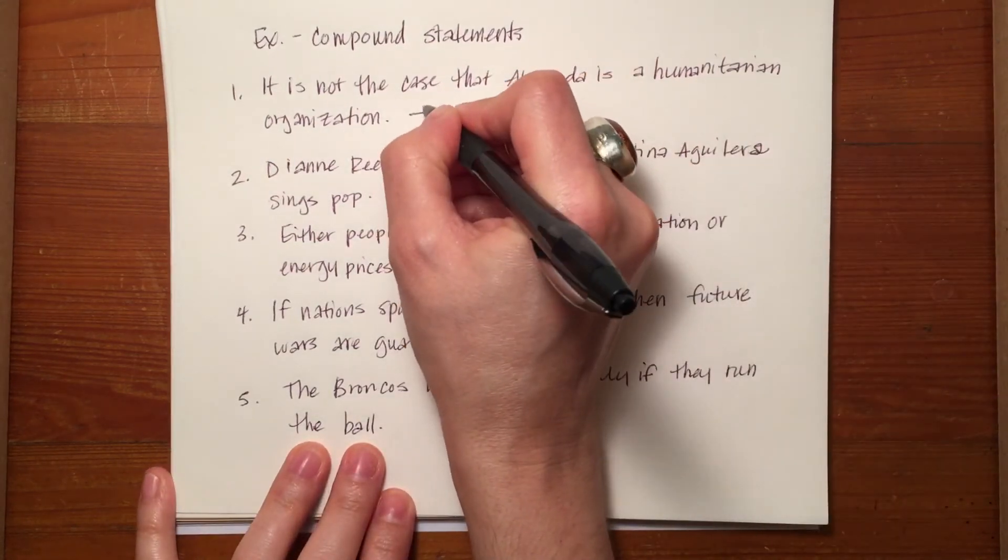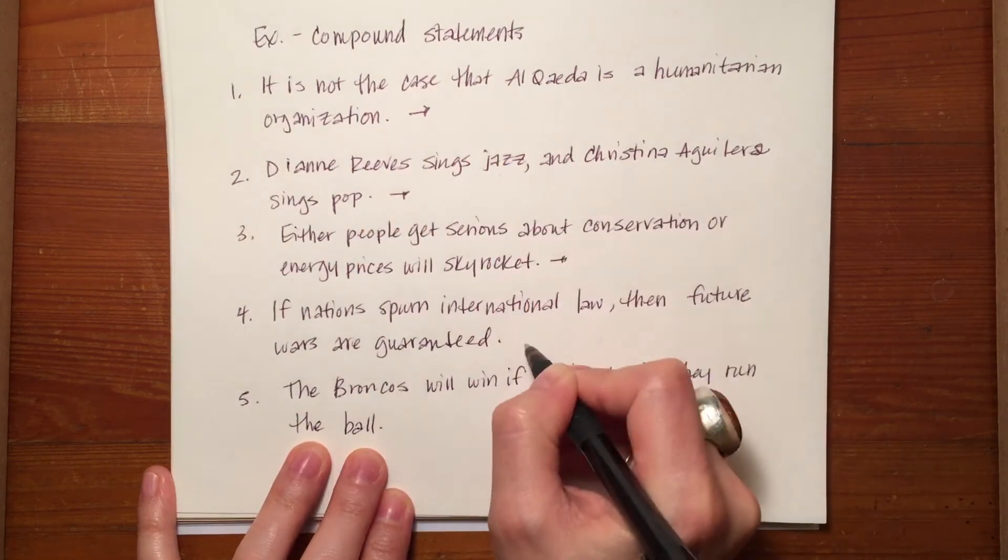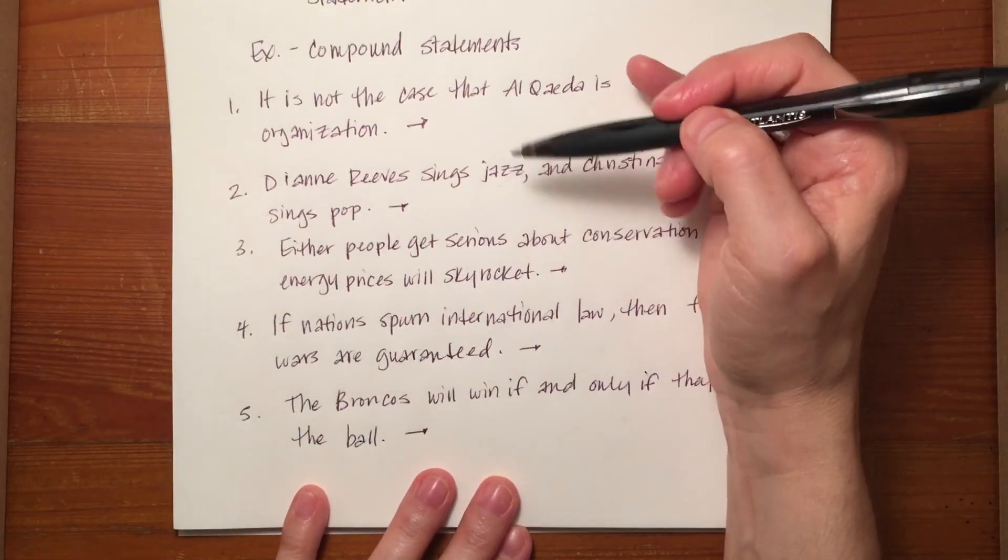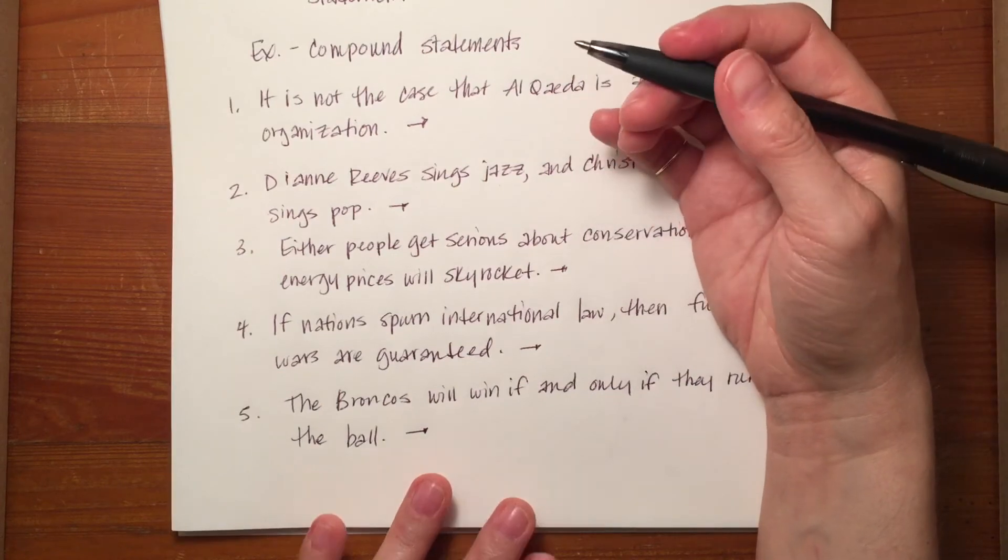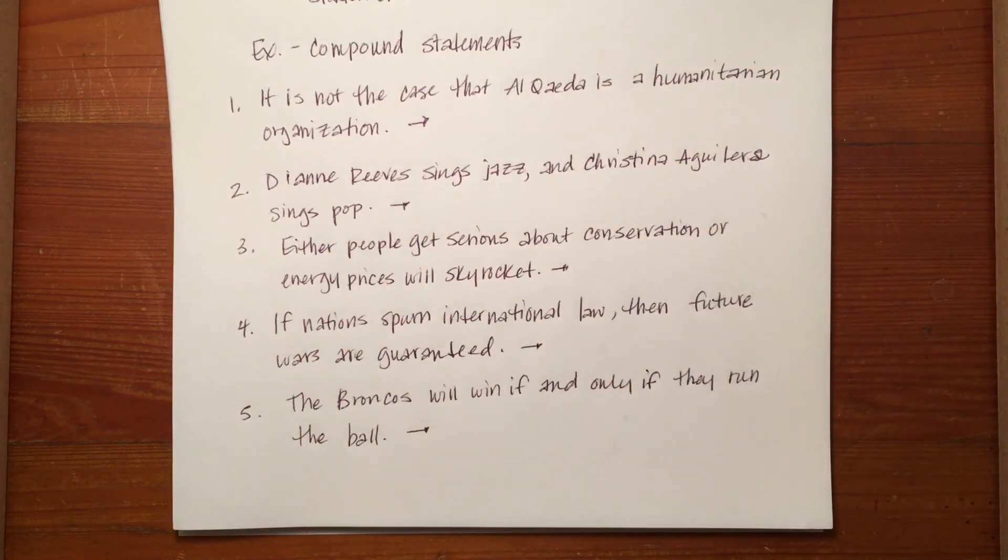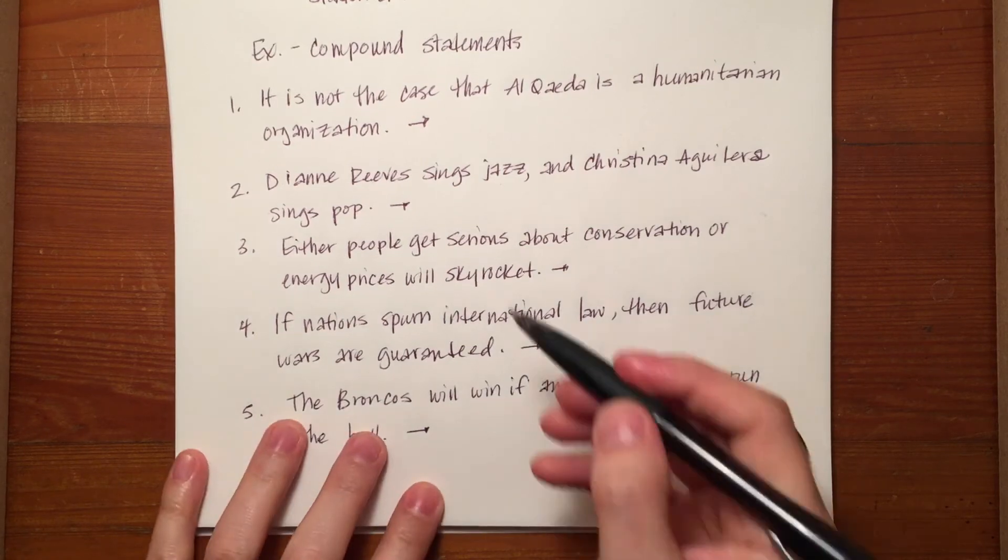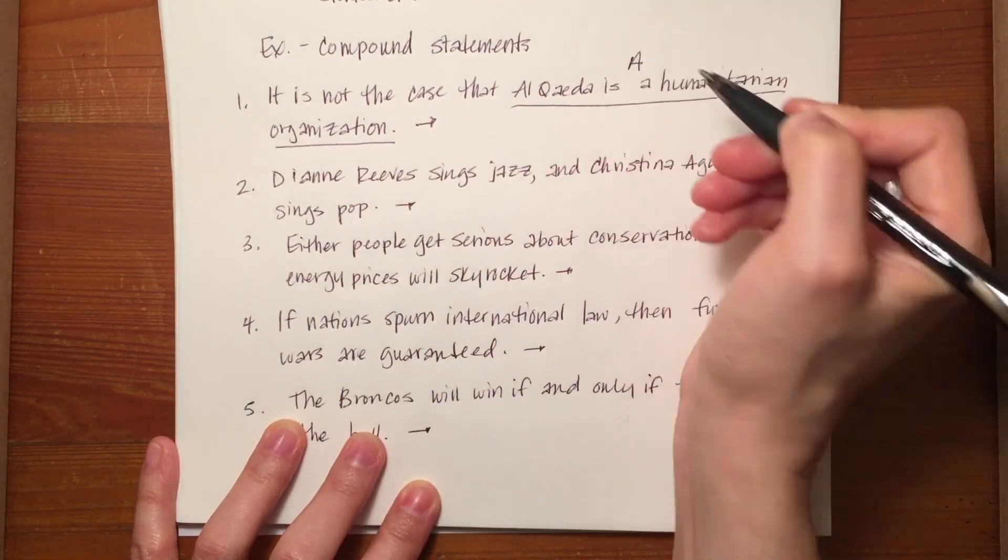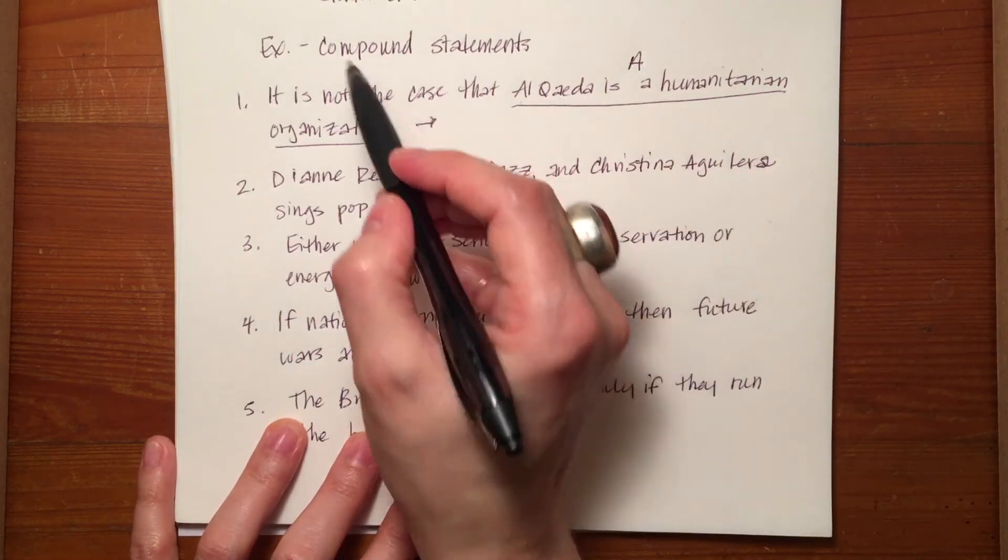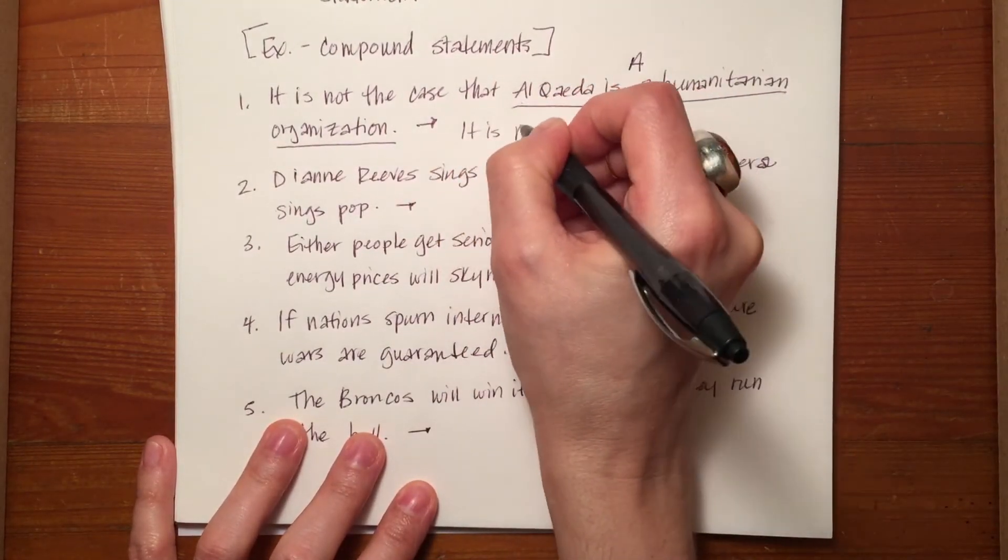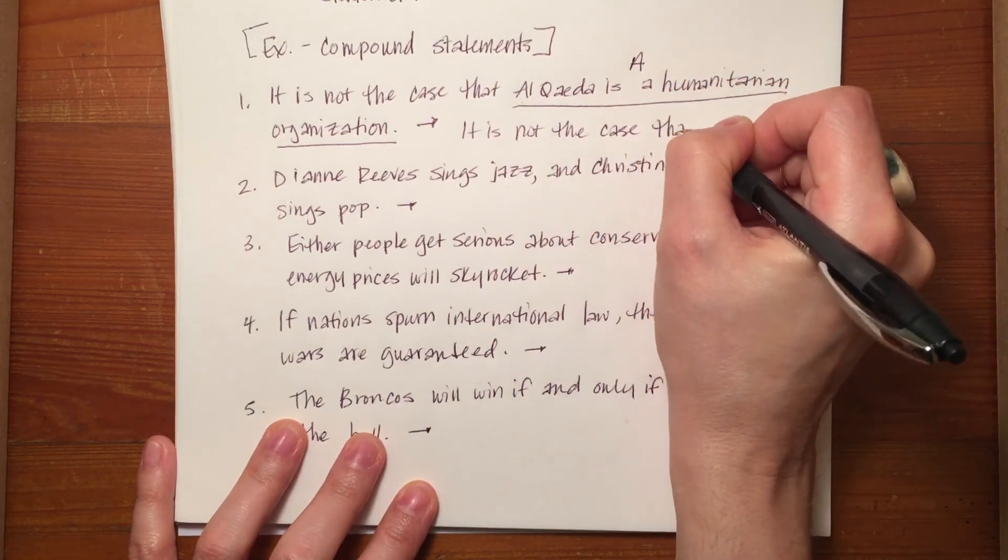So if we wanted to make these a little simpler, we could say let's go ahead and do what we used to do with our terms. This is kind of the first part of the new standard form that we'll be talking about. So you still have to deal with standard form, it's just gonna look very different. We want to just symbolize an entire statement with a letter. So it is not the case that Al-Qaeda is a humanitarian organization. That's the easiest thing to think about. So we'll go ahead and change this to it is not the case that A.